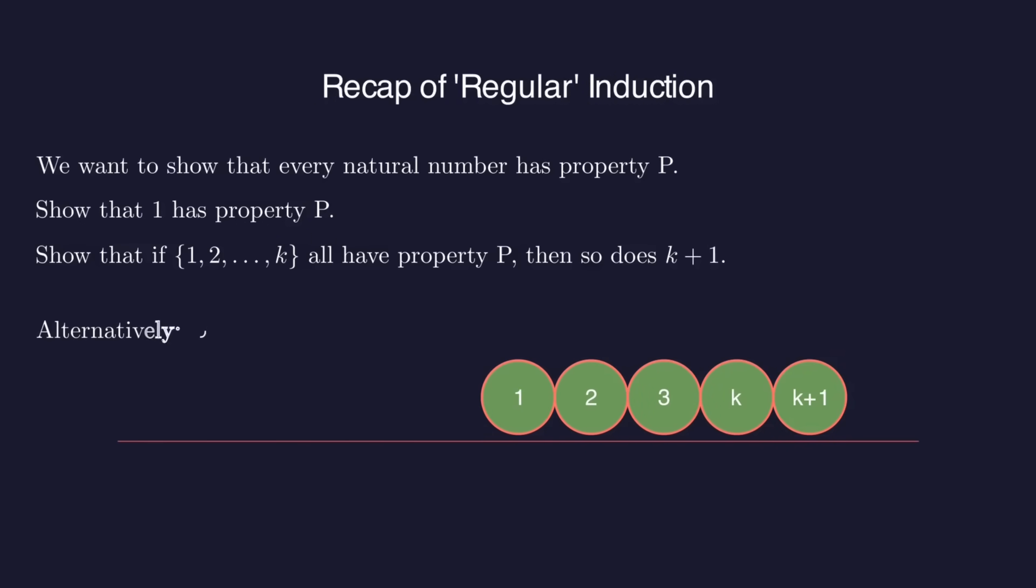Or to put it another way, assume we have some subset s of the natural numbers and we know that one is an element of s. This is called the base case and we can guarantee that anytime s includes the integers one through k it also contains k plus one.